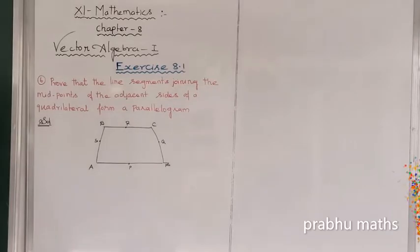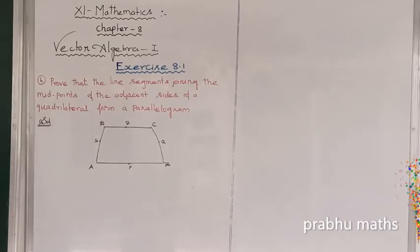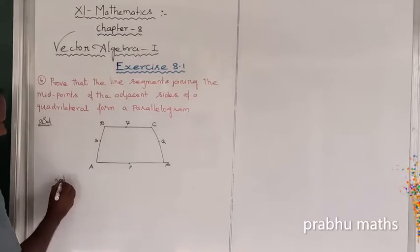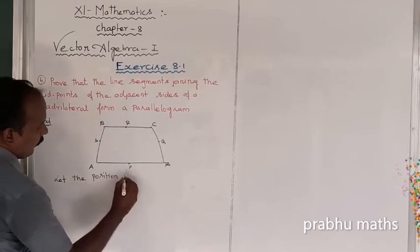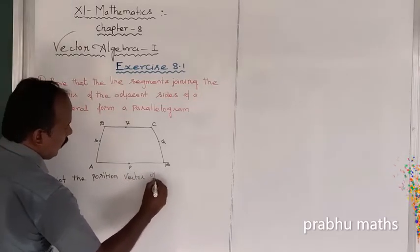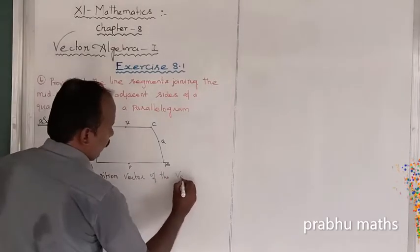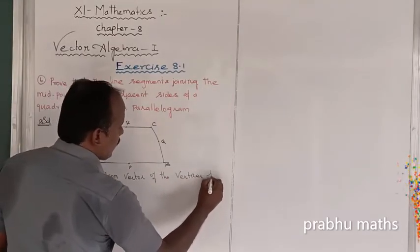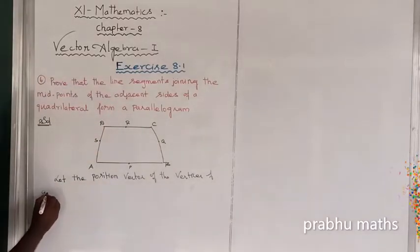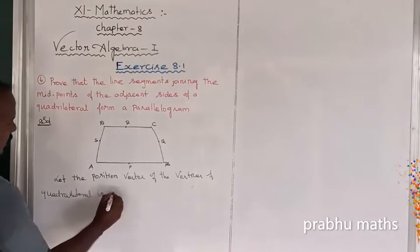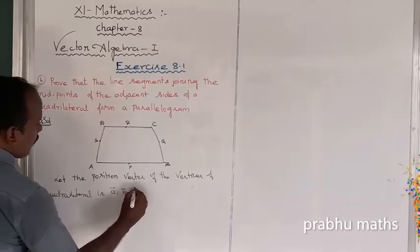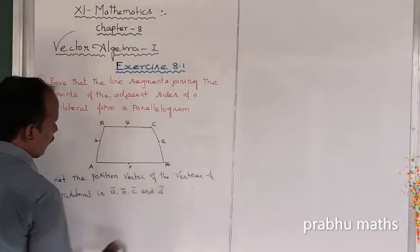Let us consider the position vectors of the vertices of the quadrilateral. The position vectors of the vertices are A vector, B vector, C vector, and D vector.